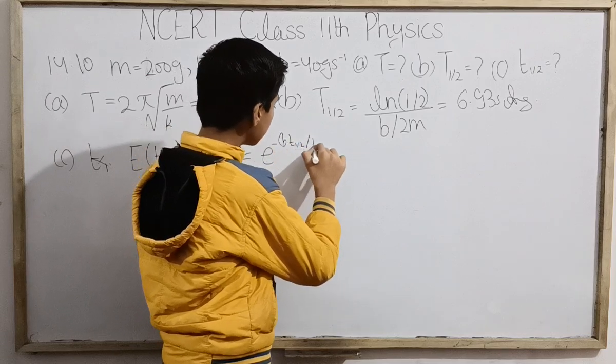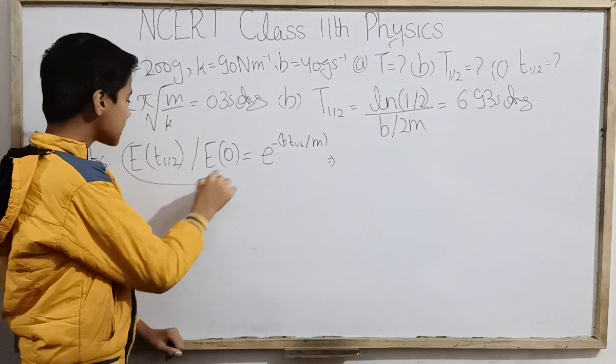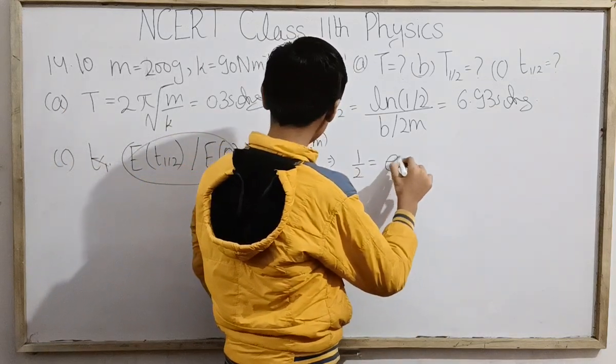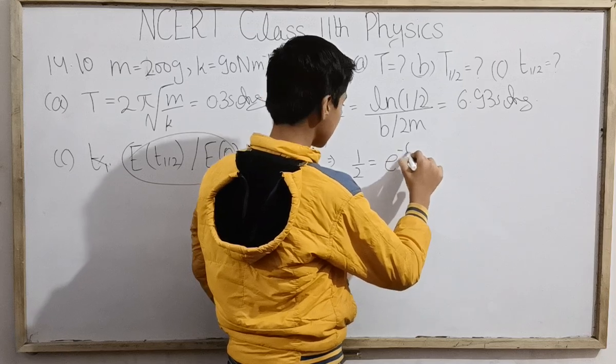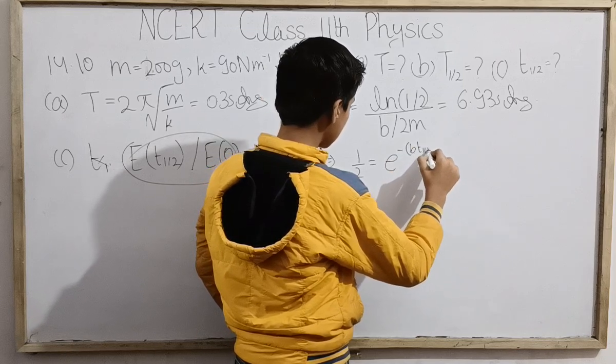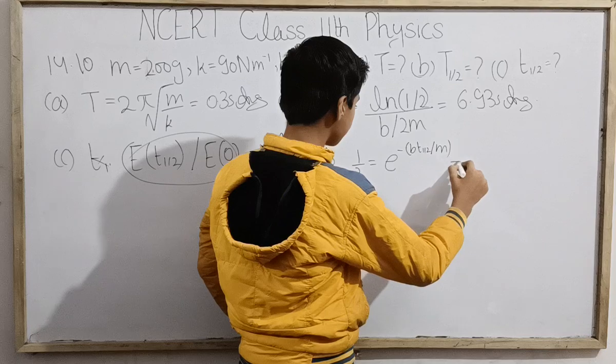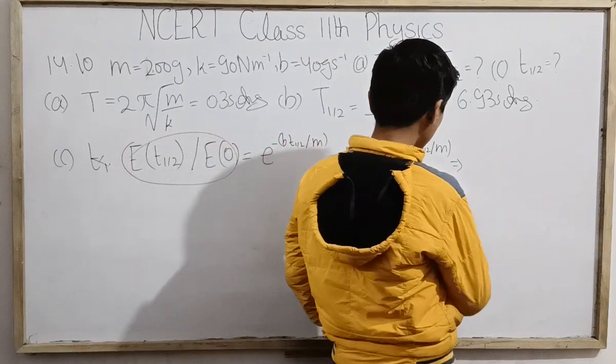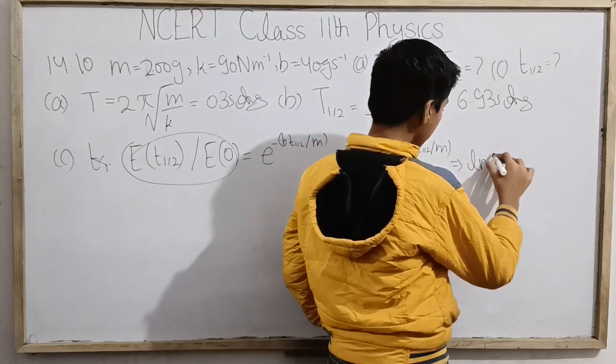We have 1/2 = e^(-bt_half/m). Taking natural log of both sides: ln(1/2) = -bt_half/m.